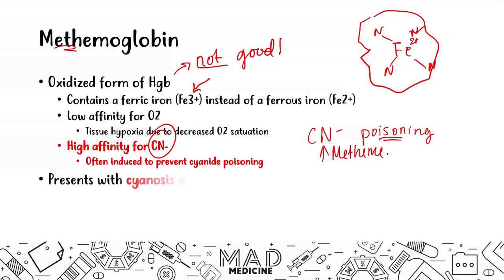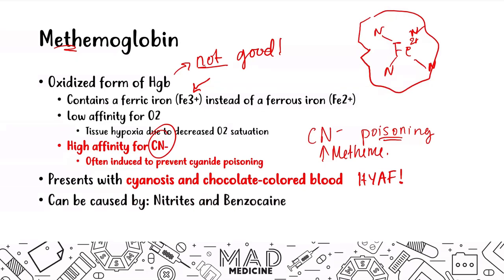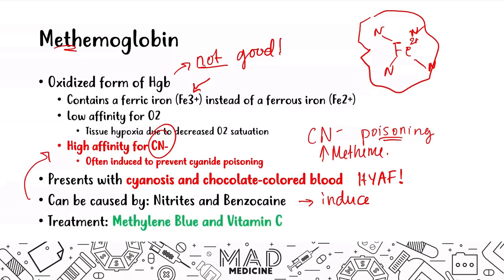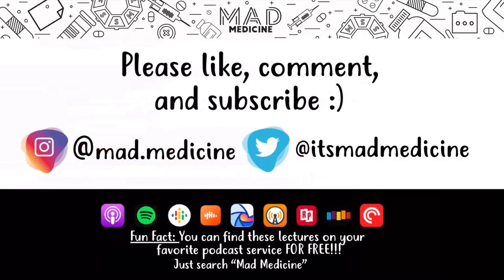Methemoglobinemia presents with cyanosis and chocolate-colored blood — that's a key high-yield giveaway for Step 1. It can be caused by nitrates and benzocaine, and those same agents can also be used to induce methemoglobinemia to treat cyanide poisoning. Treatment of methemoglobinemia is easy to remember: 'meth is treated with meth' — methemoglobinemia is treated with methylene blue and vitamin C.